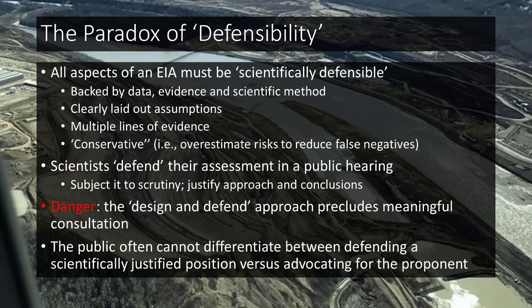A concept specific to EIA is the conservative assumption — we always want to overestimate risks. If we think there's a 50/50 chance of a significant adverse impact, that's not a high level of confidence. For very high acute risk, the US EPA uses the 99.91st percentile, which equates to an exceedance of a threshold one day every three years. The paradox is that we must defend our work under scrutiny from regulators and stakeholders who may strongly oppose the project.